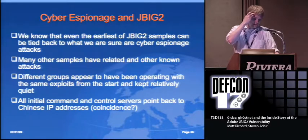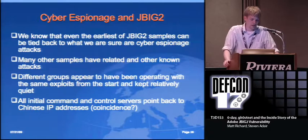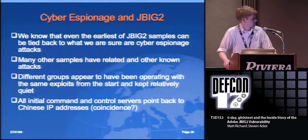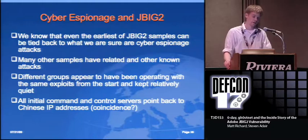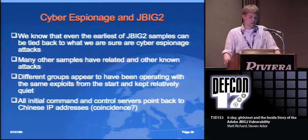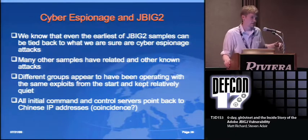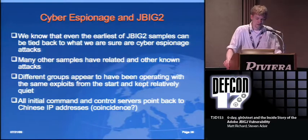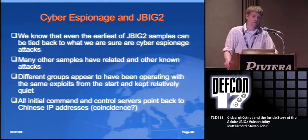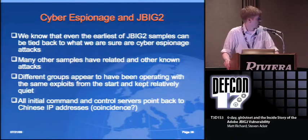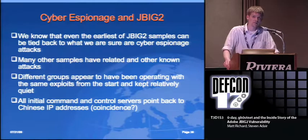We're getting to the cyber espionage in JBig2. We know that even the earliest JBig2 samples can be tied back to what we are sure is cyber espionage. There are a number of samples where we've been provided information on the back end - we know who's been targeted, we've seen the infected hosts. We know some of these have definitely been used to attack financial systems or foreign governments. Different groups appear to be operating with the same exploits. We didn't really see a lot of overlap in the initial stuff, which is kind of surprising. It seemed at least four or five different groups had the exploit for about a month and they didn't fire it out a lot. Either that or people weren't realizing what they had. It stayed relatively quiet yet seemed to be in the hands of multiple different groups.